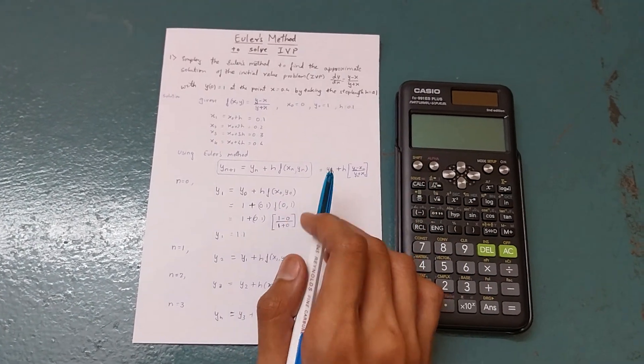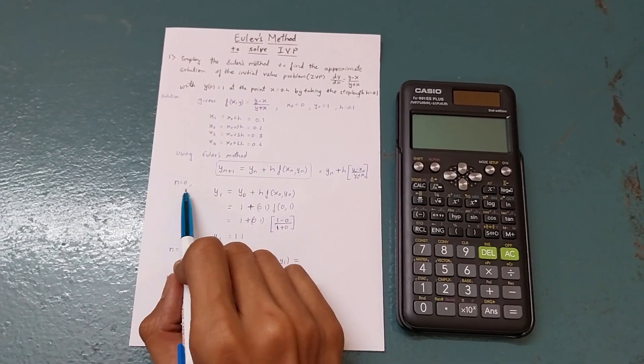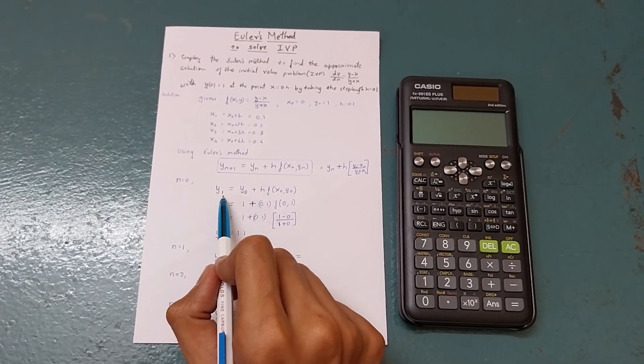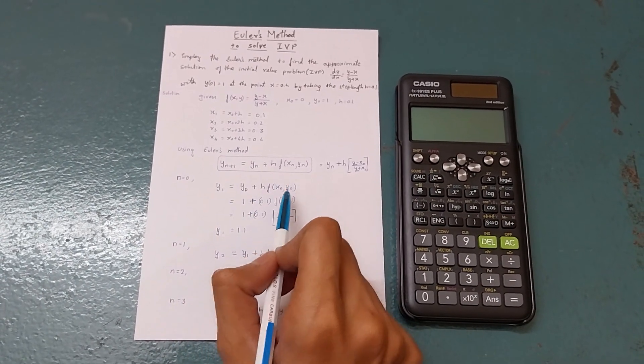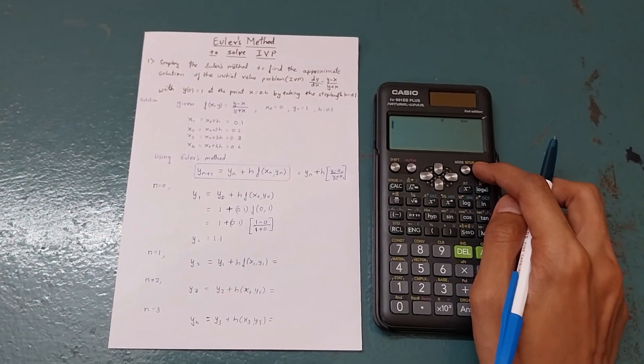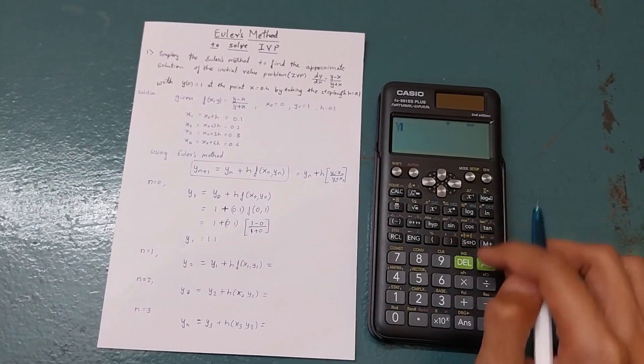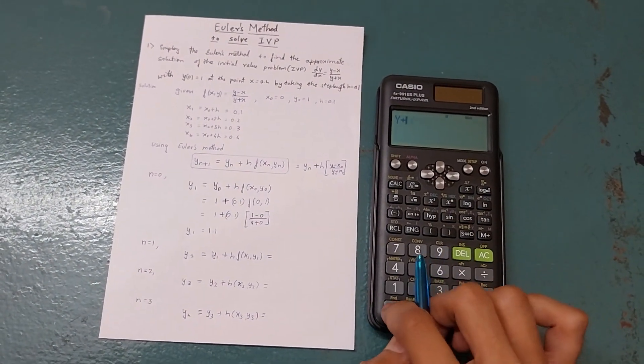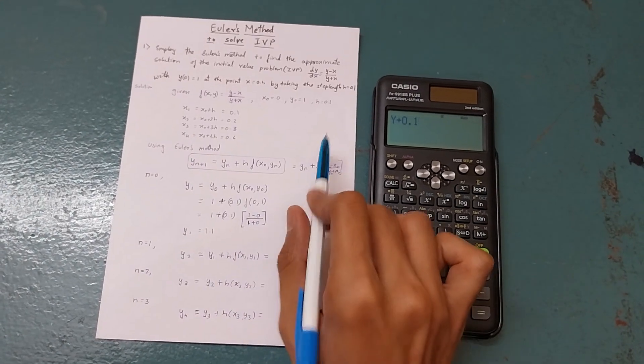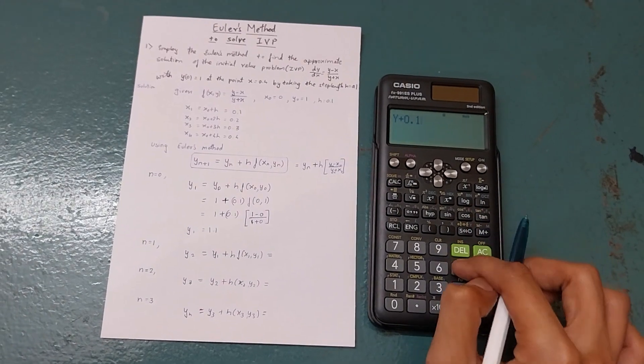Now we use calculator for this purpose. When n equals 0, we substitute wherever there is n. On the calculator, write alpha y plus h, so 0.1 - your h is 0.1, it's fixed for everything.